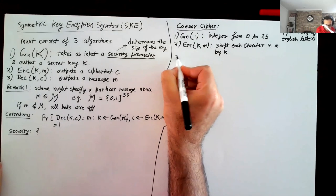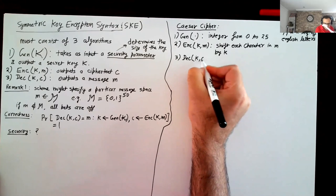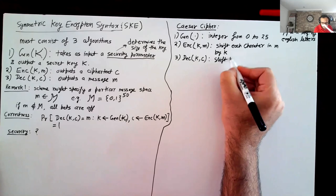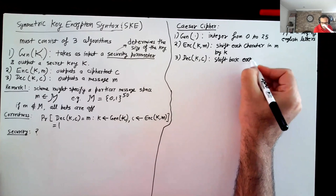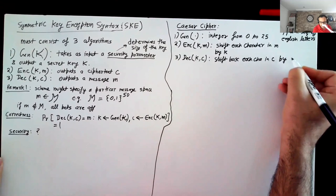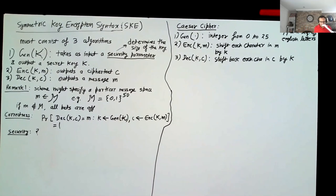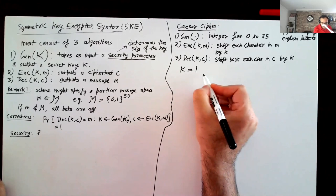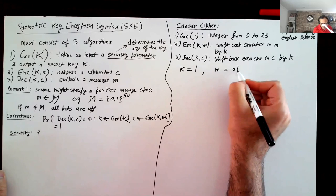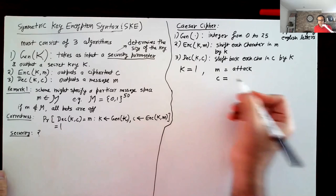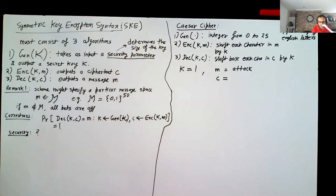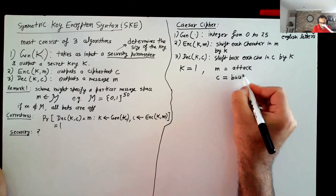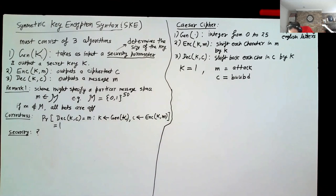How do I encrypt a message? The message space for Caesar's cipher is just a sequence of English letters — for simplicity, no commas or spaces. The encryption shifts each character by k positions. For example, with key equal to 1 and message 'attack': A shifted by 1 becomes B, T shifted by 1 becomes U, so we get B, U, U, B, D, and K becomes L. The ciphertext might look like complete junk to a naive observer.